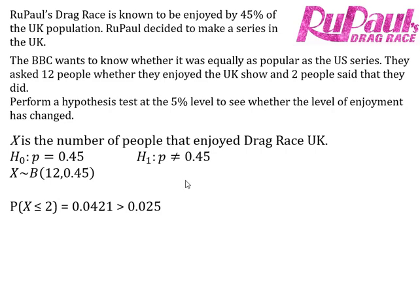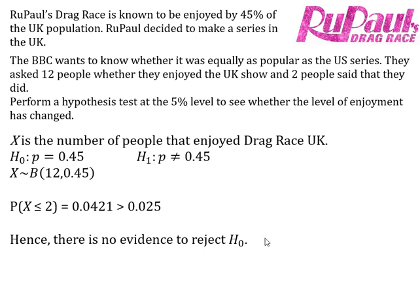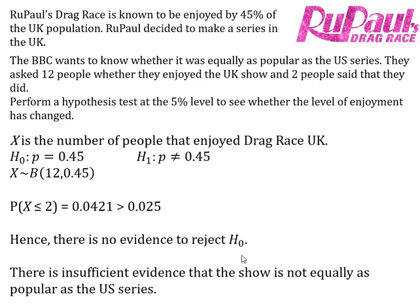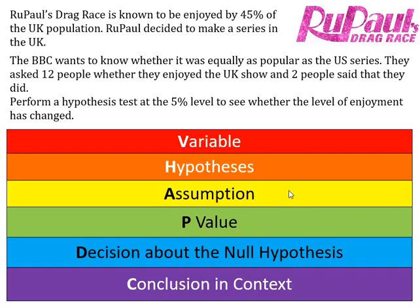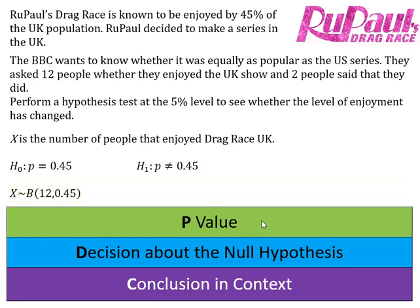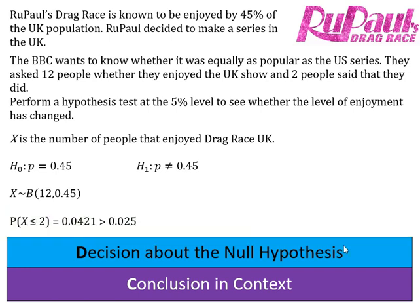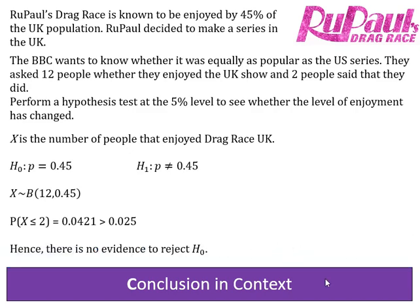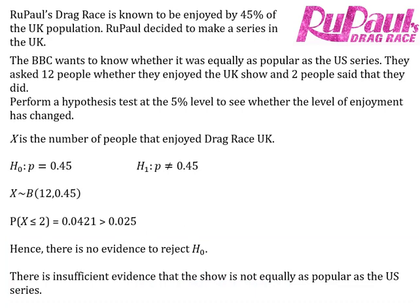In context, there is insufficient evidence that the level of enjoyment has changed, meaning no evidence that the show is not equally as popular as the US series. To summarise the p-value method steps: write down the variable, write down the hypotheses, write down the distribution assumption, work out your p-value as the probability of getting the test statistic or more extreme, compare it to half the significance level, state your decision on H0, and write a conclusion in context. That's it for this video, thank you.